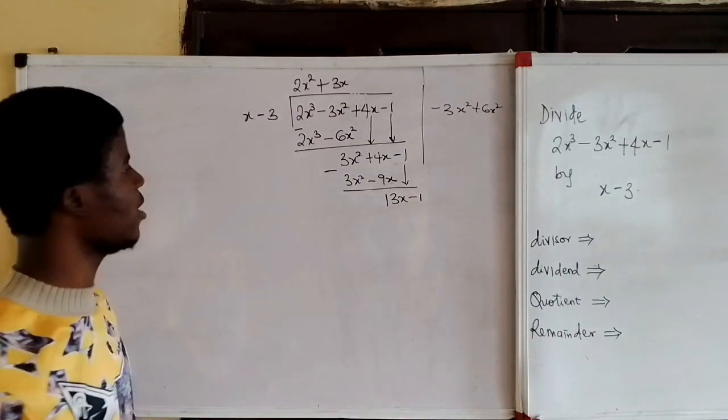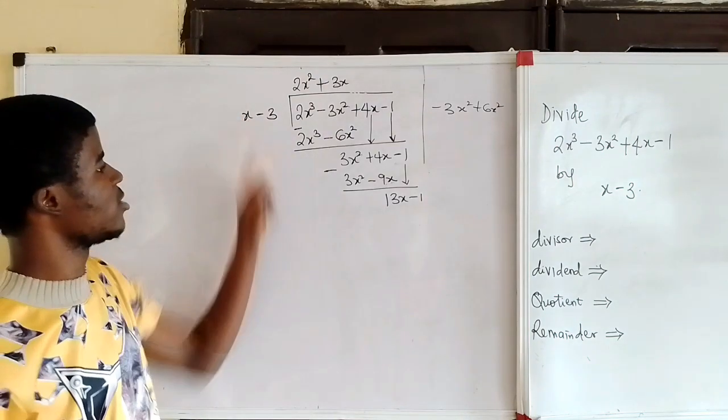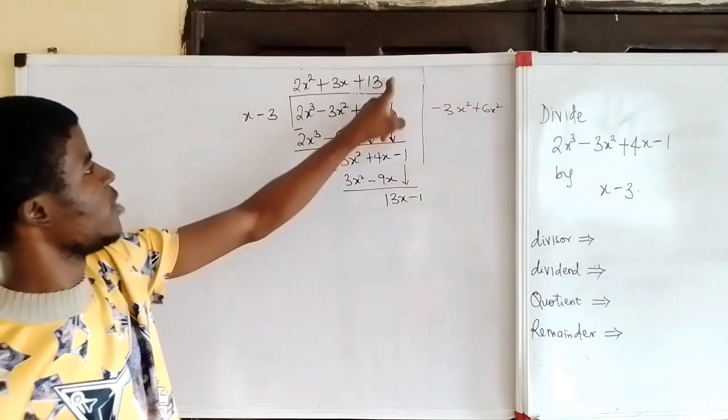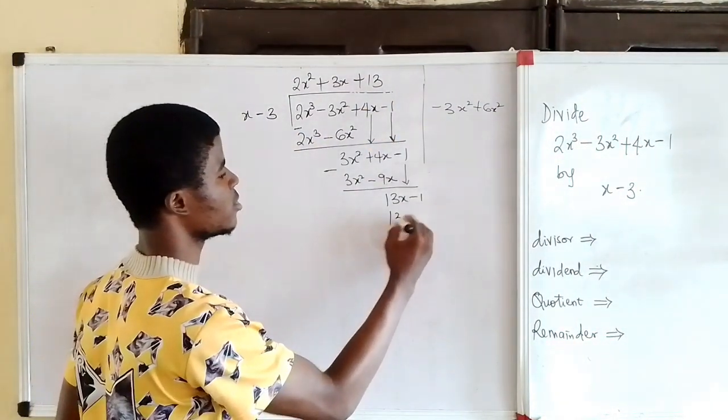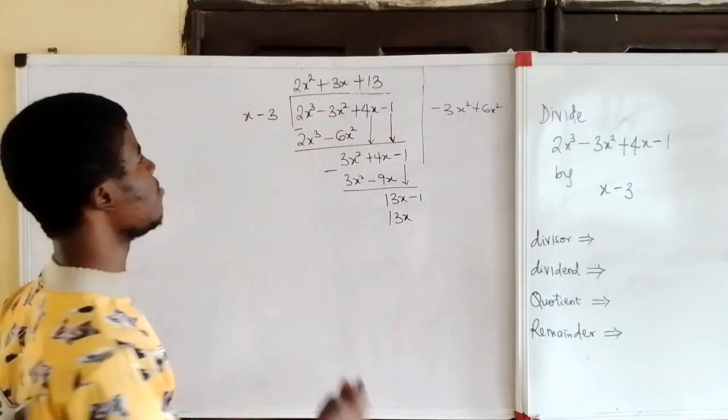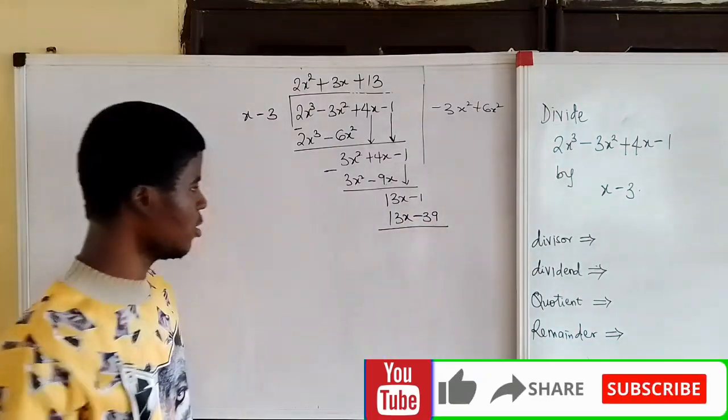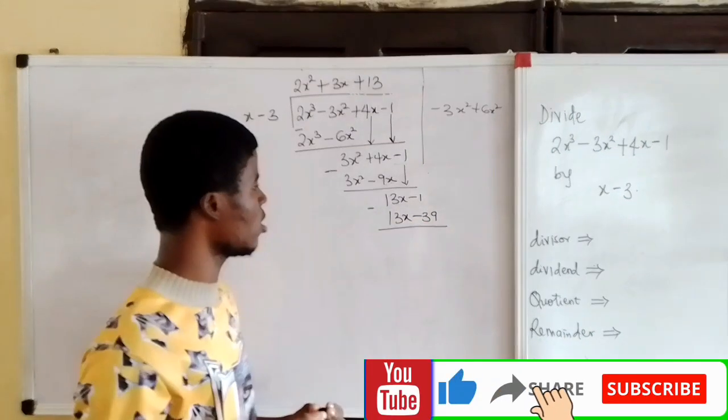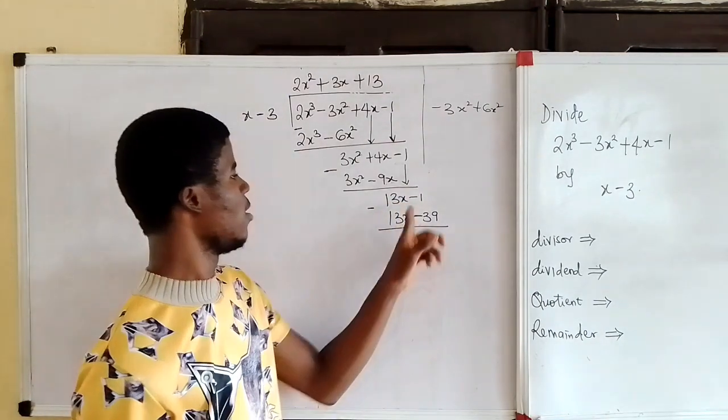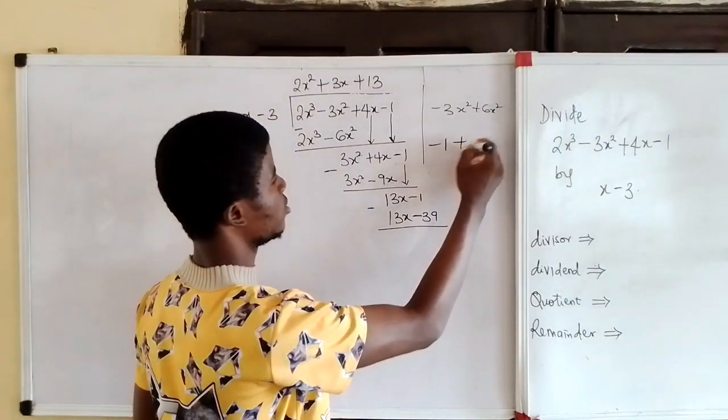So we have to divide again. 13x divided by x is 13. And so x times 13 is 13x. Minus 3 times 13 is minus 39. We subtract. 13x minus 13x is 0. Minus 1 minus minus 39, that's minus 1 plus 39.